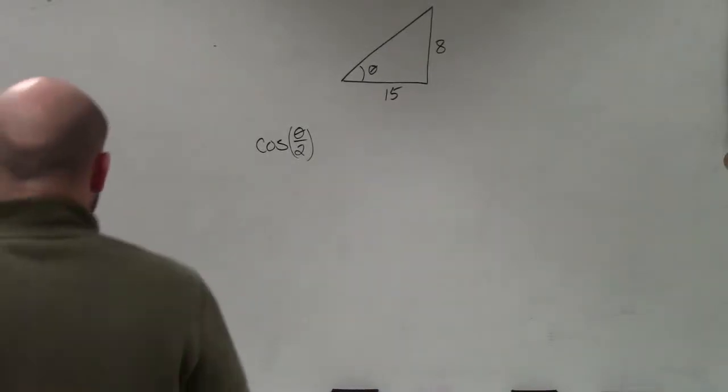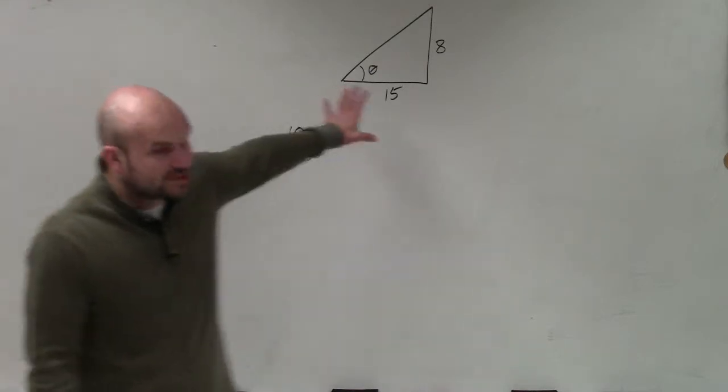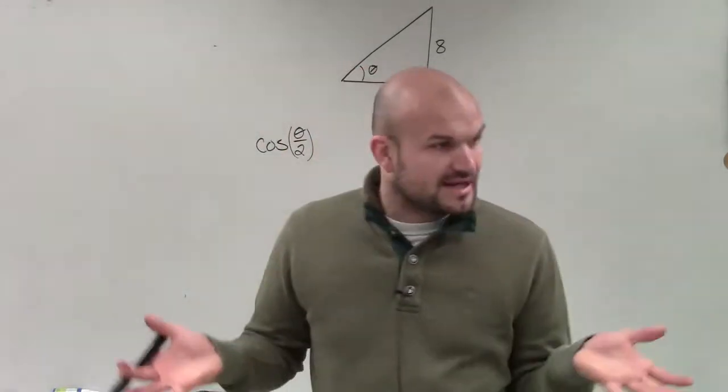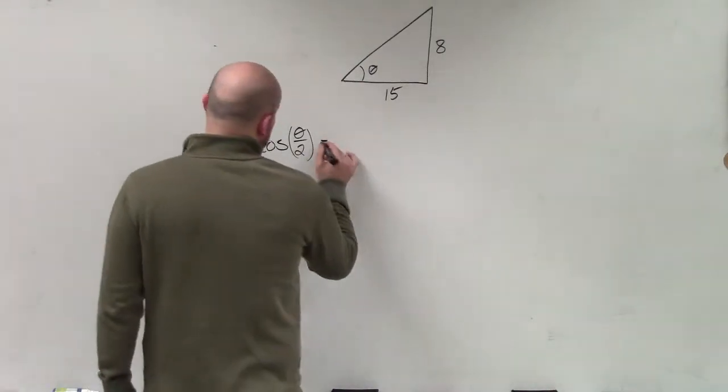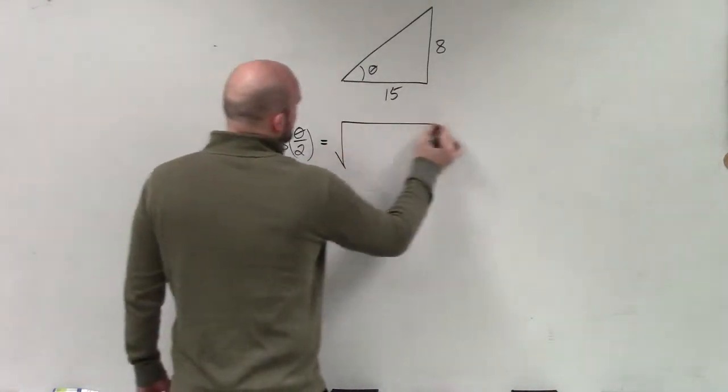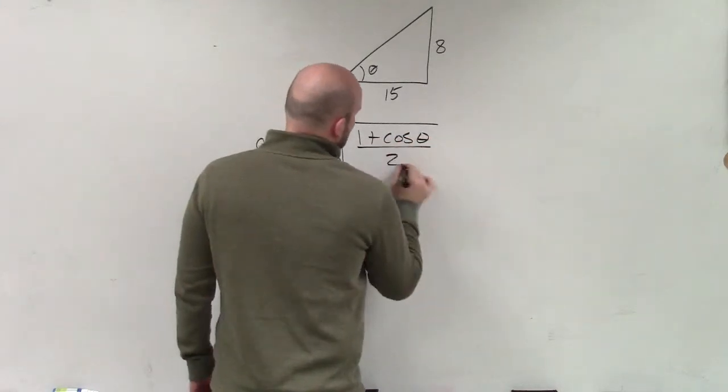So to do this problem, ladies and gentlemen, first thing, they're asking us to find the cosine of theta over 2 for this triangle. So the first thing we need to do is make sure we know the formula, which again will be provided to you. But the formula for this is going to be the square root of 1 plus cosine of theta divided by 2.